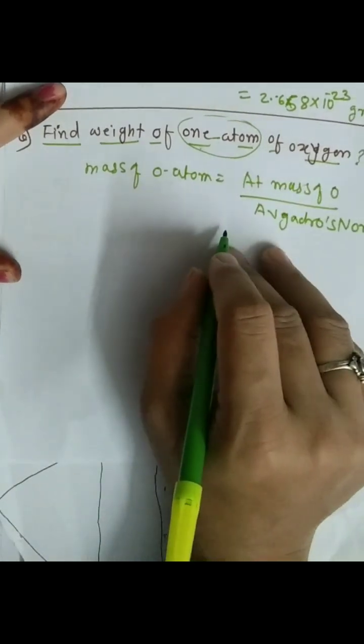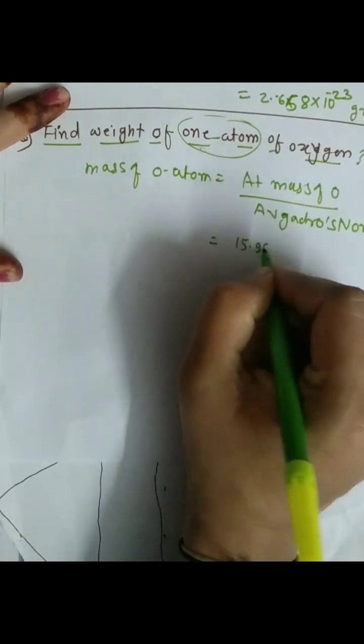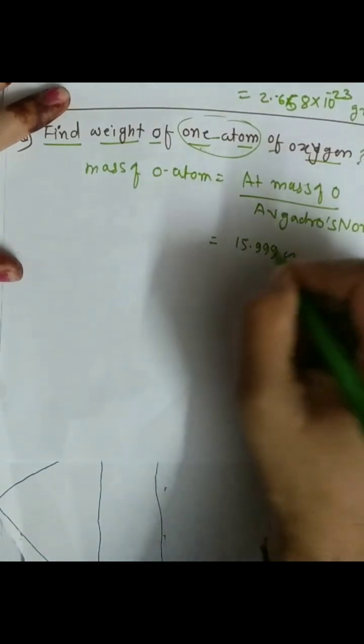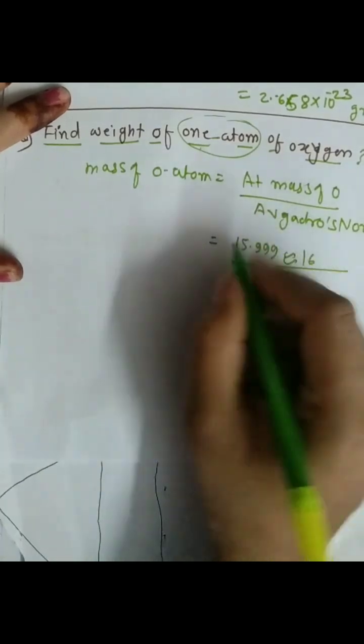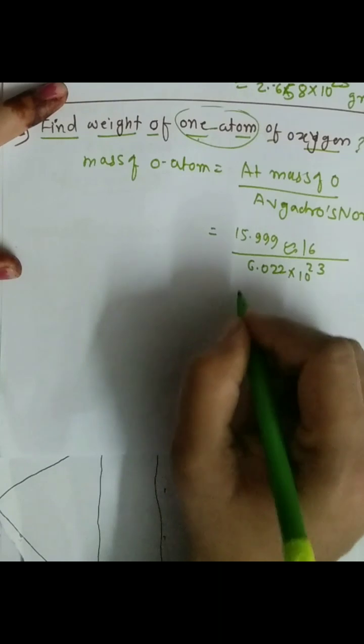Here the atomic mass of oxygen is 15.999, we should consider as 16, divided by Avogadro's number which is 6.022 × 10²³.